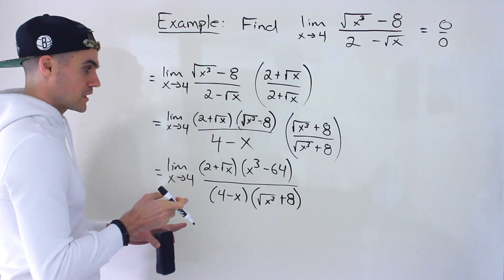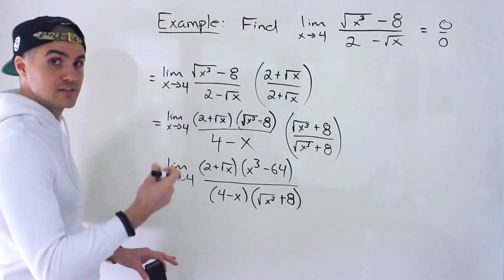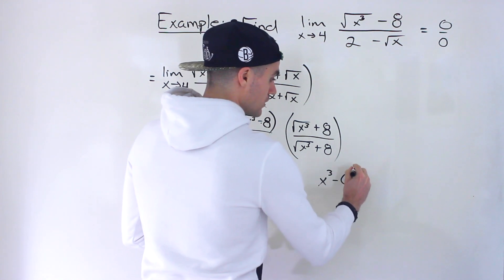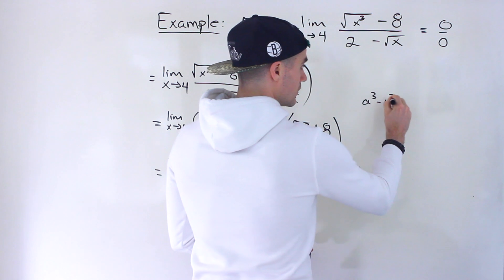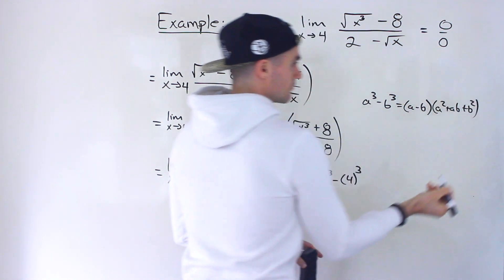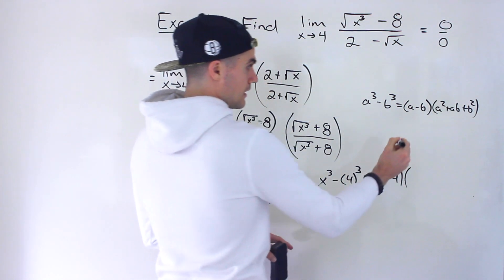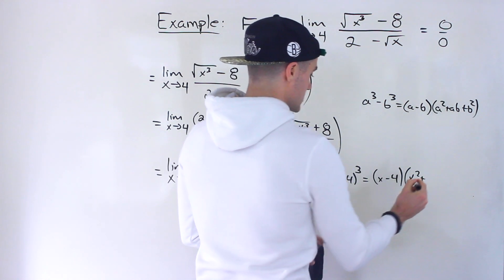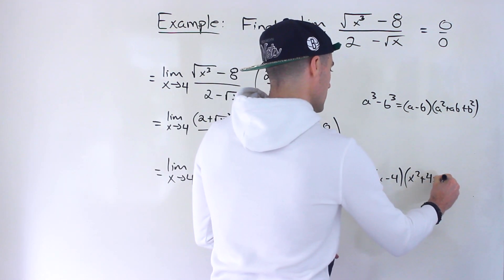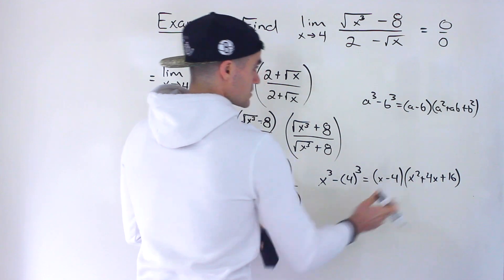Now notice we can factor x to the power of 3 minus 64 as a difference of cubes: x³ minus 4³. The difference of cubes formula gives us x minus 4, times x squared plus 4x plus 16, since a is x and b is 4, so we get x squared plus 4x plus 16.